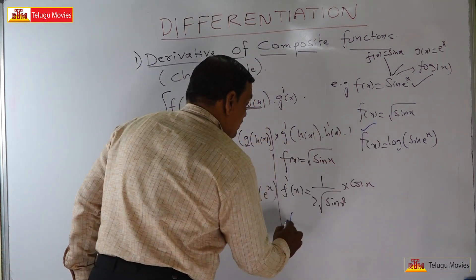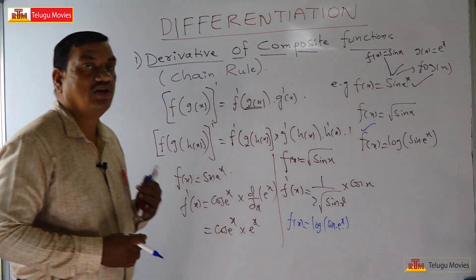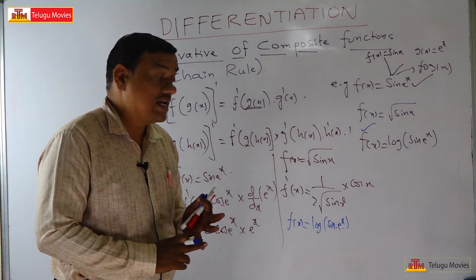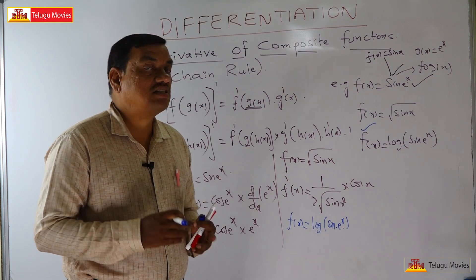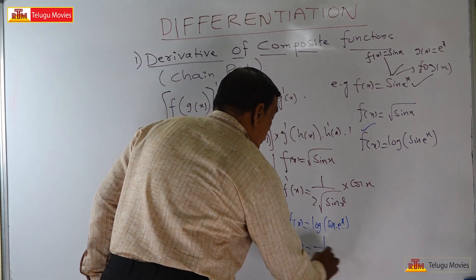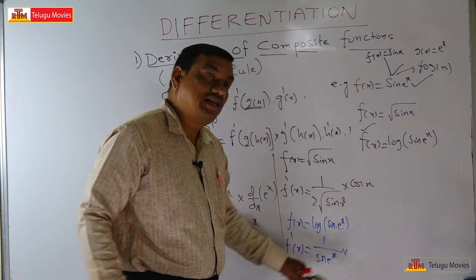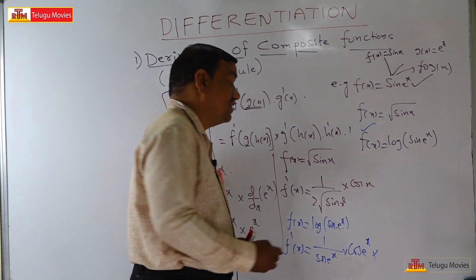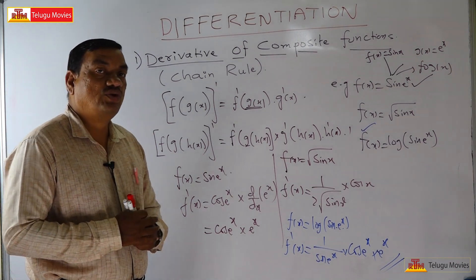Coming to this function f of x is equal to log of sin of e power x. Here there are three functions: log x, sin x, and e power x. The derivative of log x is 1 upon x, sin x is cos x, e power x is e power x. So the derivative is 1 by sin of e power x, into cos of e power x, into e power x. This is the derivative of a composite function — the chain rule — a very important concept to remember.